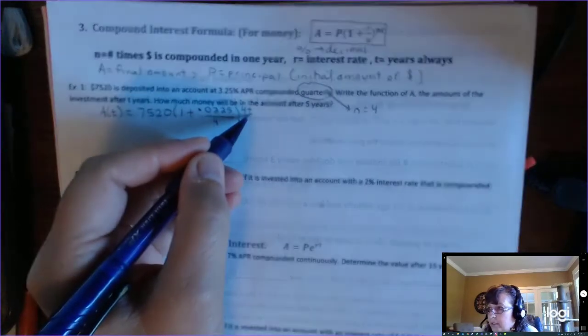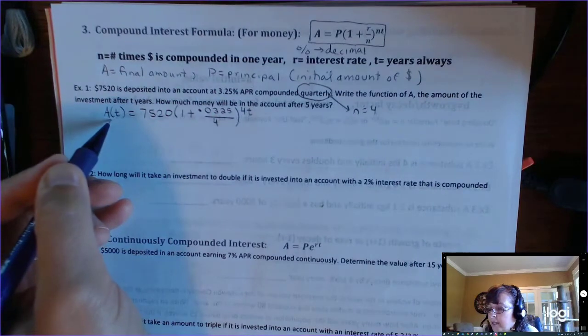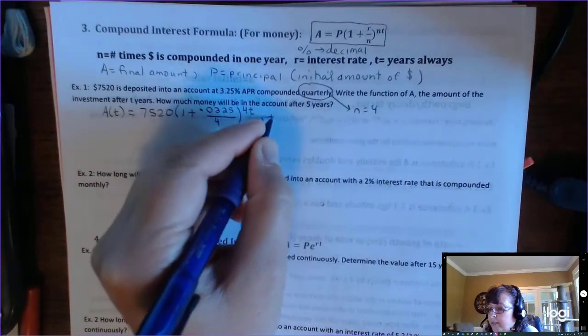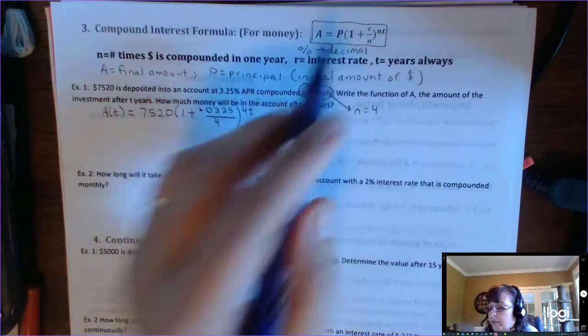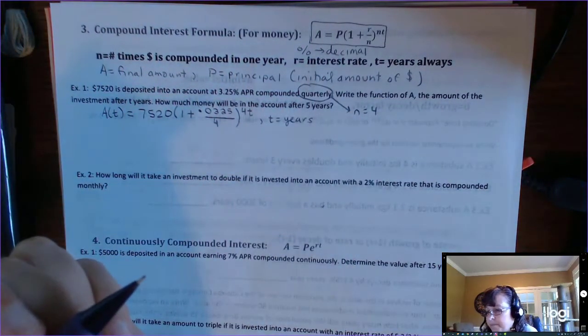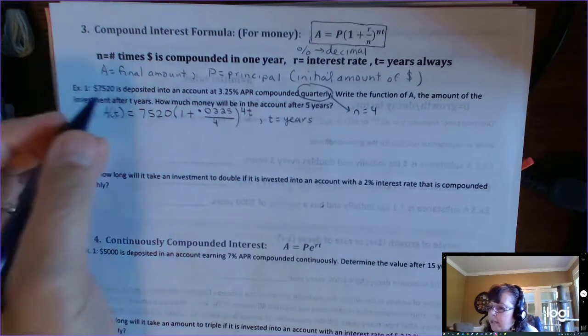T is years, A is final amount. You don't have to tell me T is years here because this is a specialized formula. T is always in years. So that's our function.